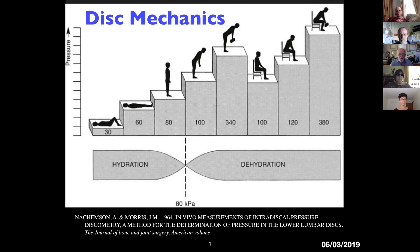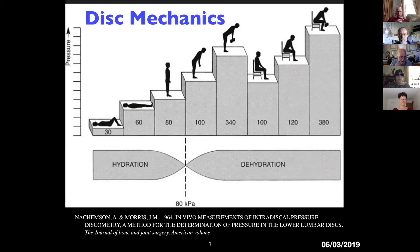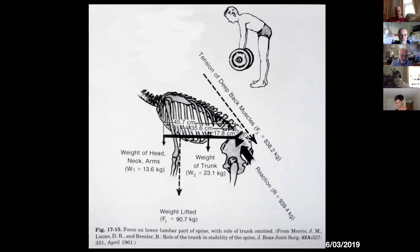Then you bend over, it's 100. If you lift a weight, it's 340. Then you sit down, you go back down to 100. But if you sit down and lean forward, it's 120. The worst thing you can do is bend forward and try to lift something because that increases the pressure on your spine.